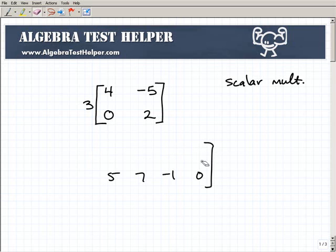Scalar multiplication is actually really, really easy, and this is an example of a situation where we need to use scalar multiplication. So you'll see a number, some sort of number outside of a matrix like so.